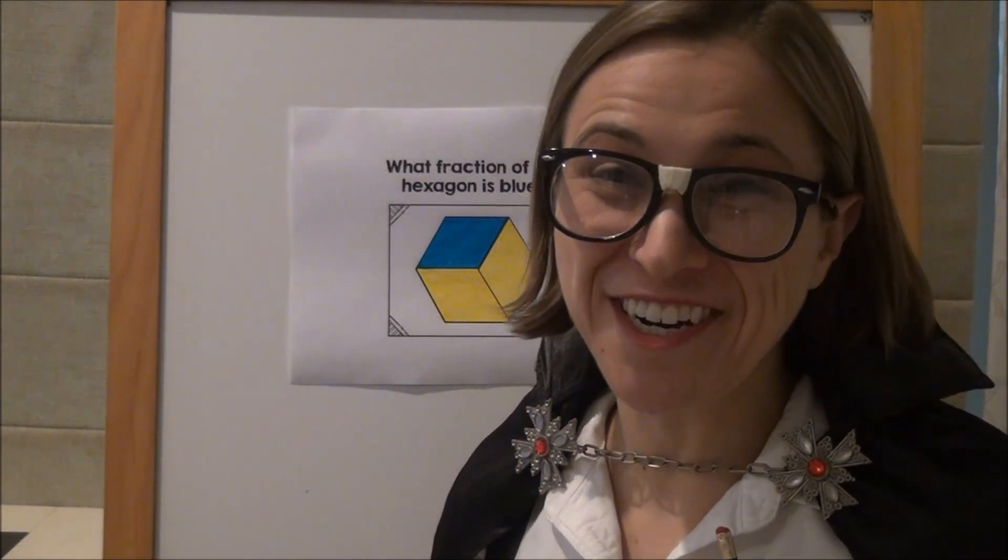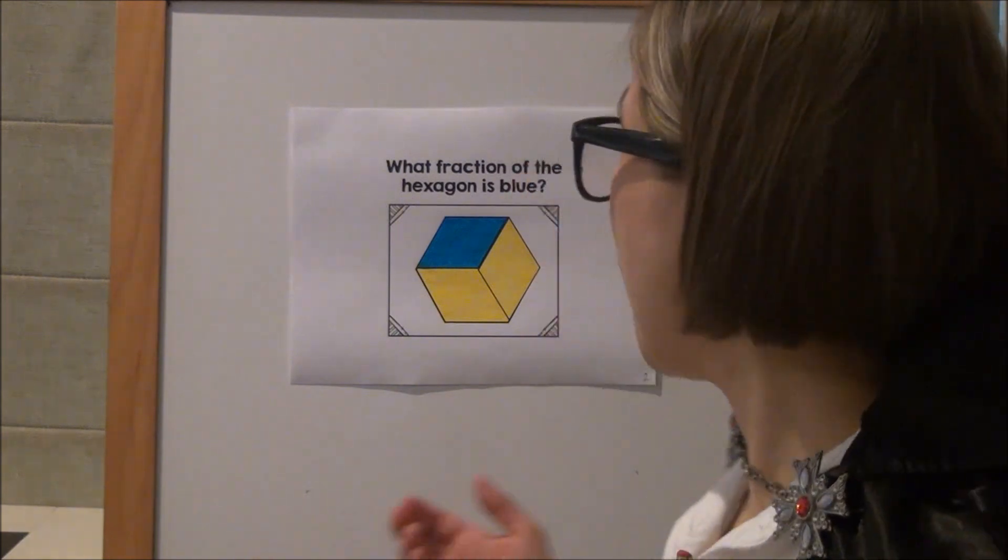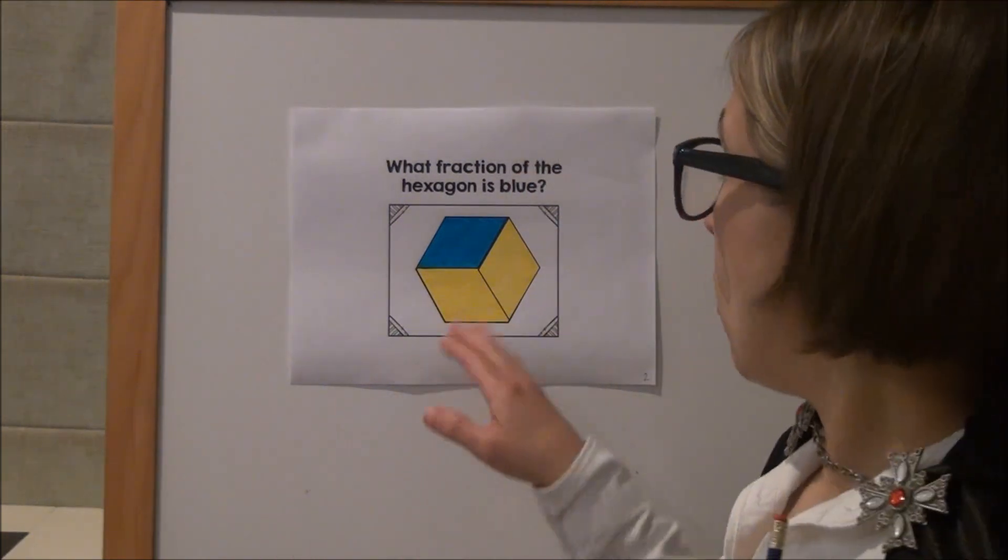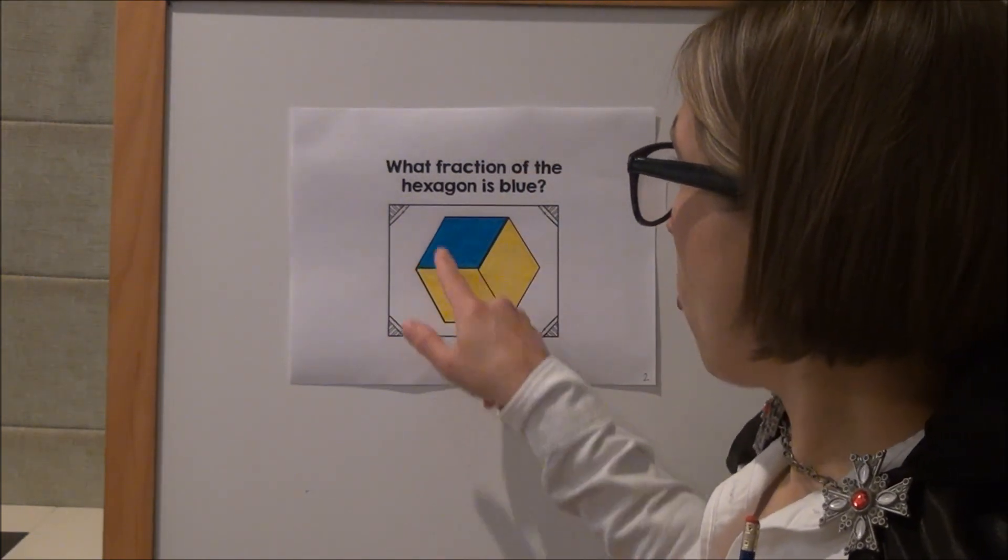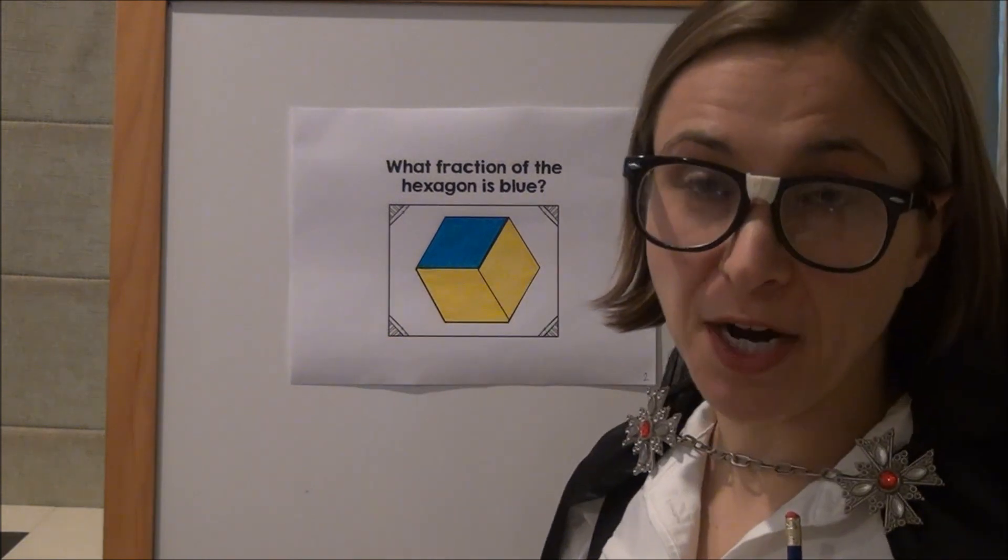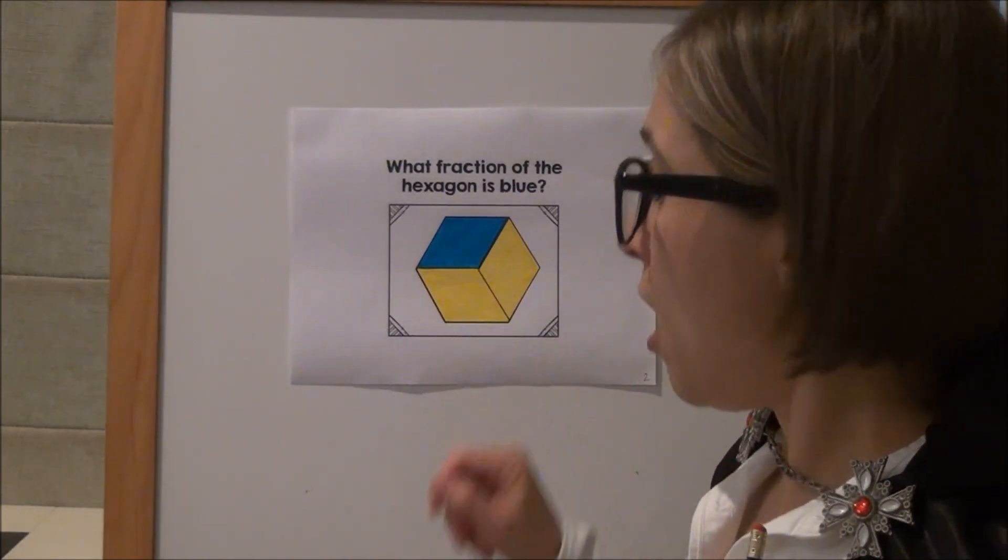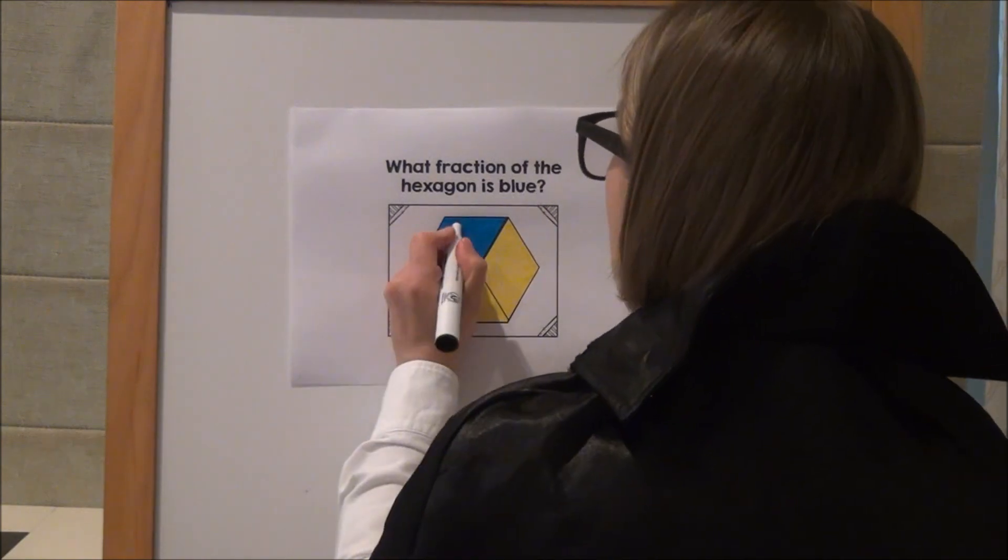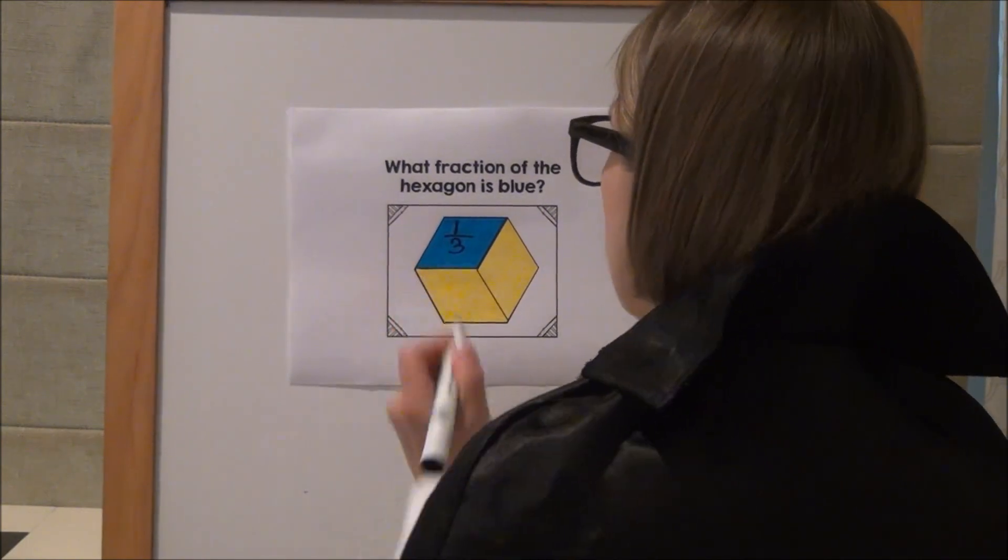Well, look at that, boys and girls. I bet your minds are blown. So what I ended up doing was I changed the shape or I broke it into equal parts. Now I can easily see that, oh, one third or one of the three parts is blue.